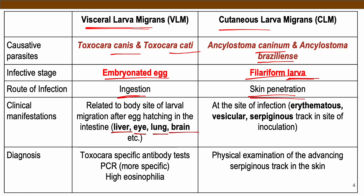VLM causes destruction of these particular organs. While for cutaneous larva migrans, from the word cutaneous, these particular parasites only attack at the site of infection. They are usually seen as skin diseases, and from the word larva migrans, we can actually see how this particular parasite moves at the surface of the skin.